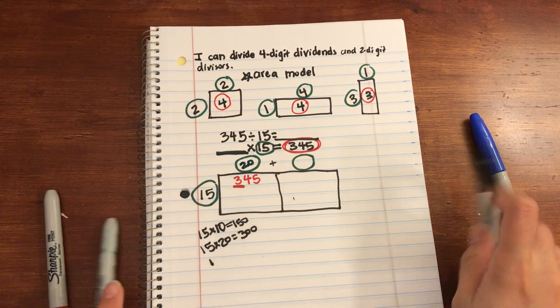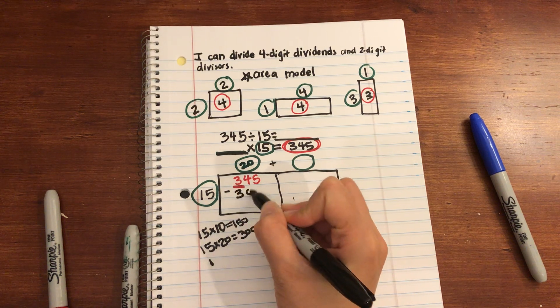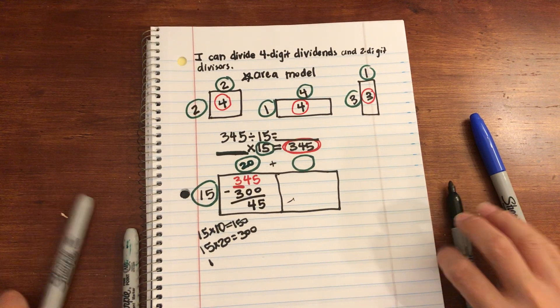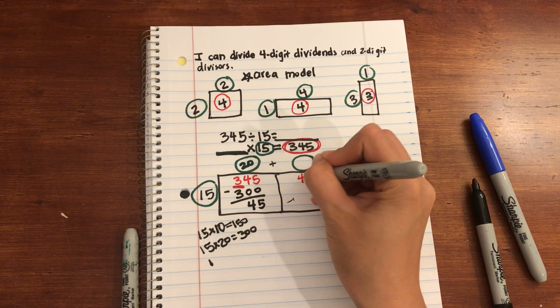20 groups of 15 is equal to 300. So I can subtract that, and that's equal to 45. I'm going to rewrite that same number up top in the next box.